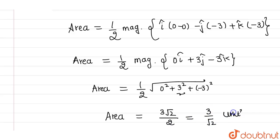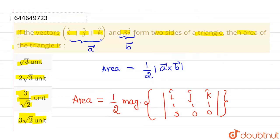So 3 by root 2 unit square is the area of triangle. So the correct option is option 3 which is 3 by root 2 and rest all options are incorrect. I hope you understood. Thank you.